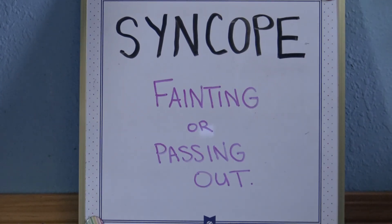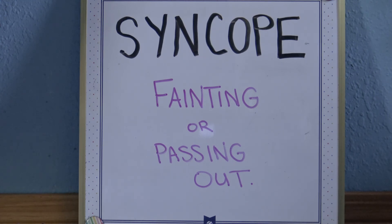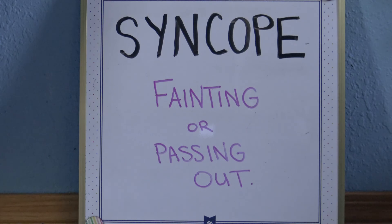Syncope — syncope is another word for fainting or passing out. It's usually temporary. They are considered to have syncope if they become unconscious or go limp and then soon recover. So syncope is fainting.